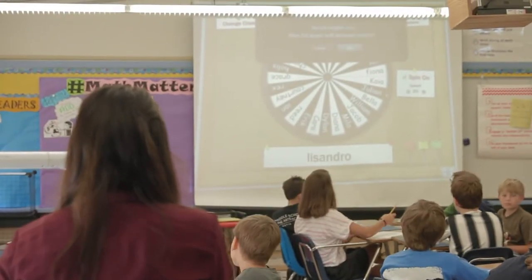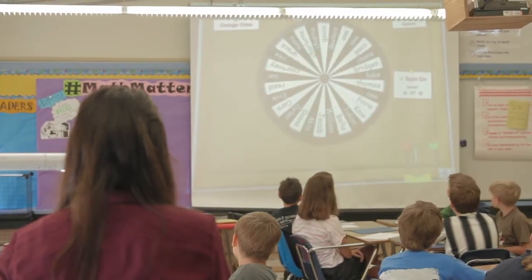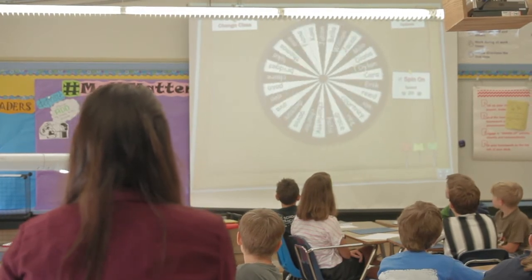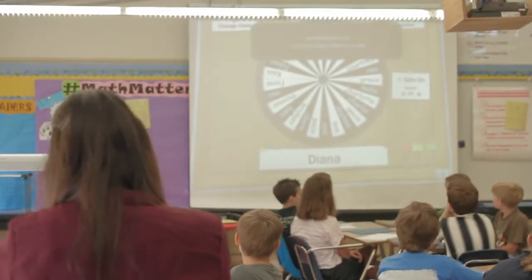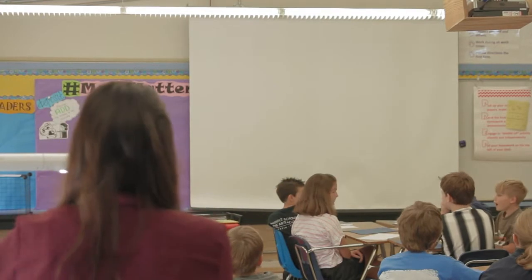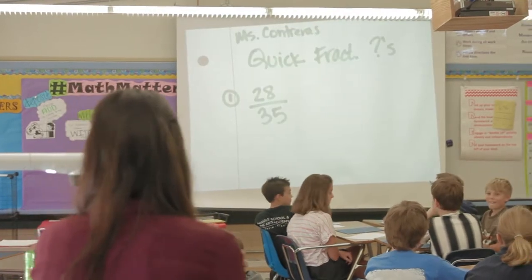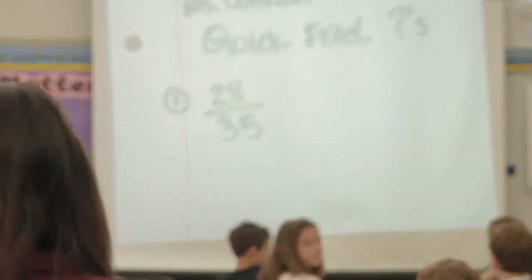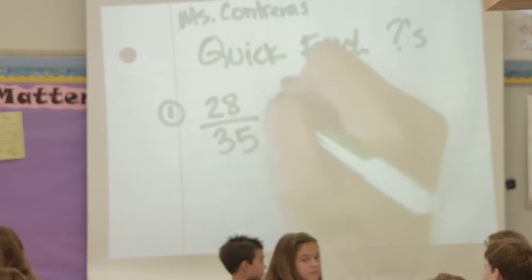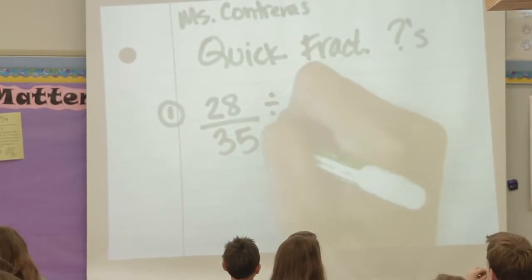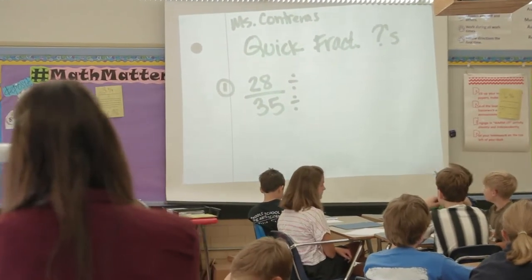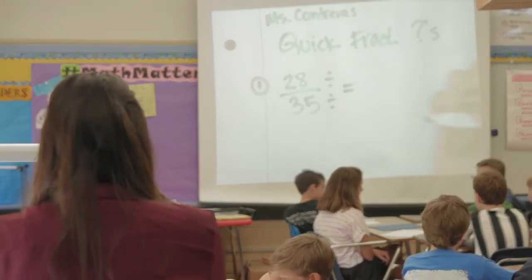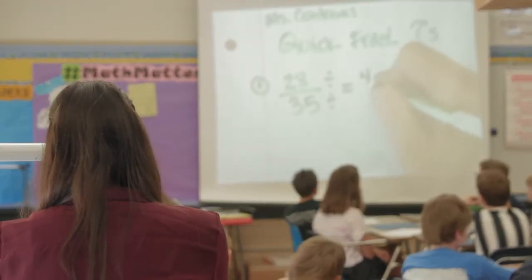Alright, we're spinning — we've had about 30 seconds. Who's it going to be? Miss Diana. Alright, what did you divide both of these numbers by? Seven. Okay, do we agree with that? Yes. I can divide 28 by 7, 35 by 7. Diana, what was your reduced fraction? Four fifths. We agree? Yes.